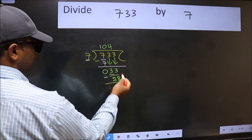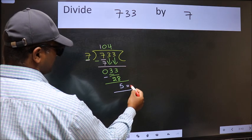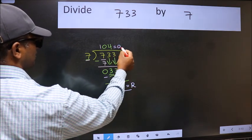No more numbers to bring it down. So we stop here. This is our remainder and this is our quotient.